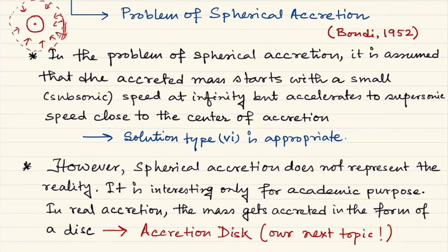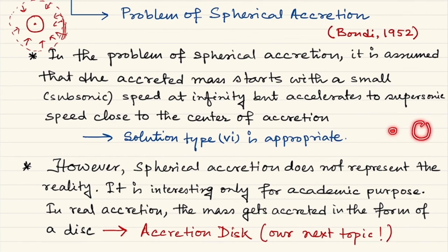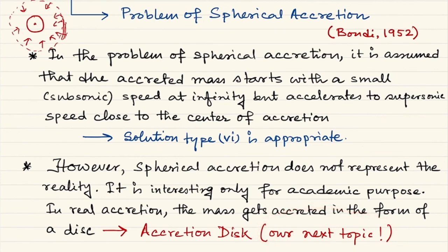Real accretion occurs in the form of a disc. A dense compact star at the center accretes mass from a less massive but larger companion star; that mass carries angular velocity and forms an accretion disc. This famous accretion disc problem in astrophysics is our next topic.